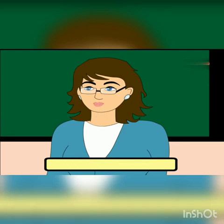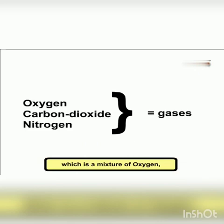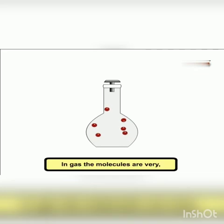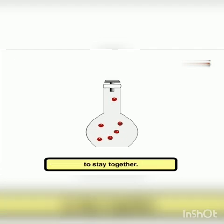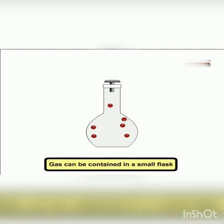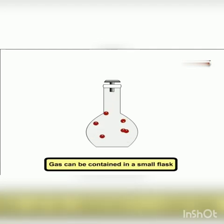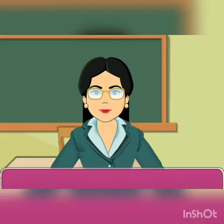Gas is the third state of matter. An example is air, which is a mixture of oxygen, carbon dioxide, nitrogen and other gases. In gas, the molecules are very loosely bonded. Gas can be contained in a small flask or a big container.